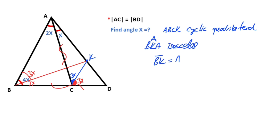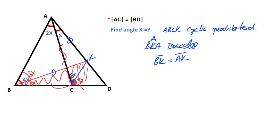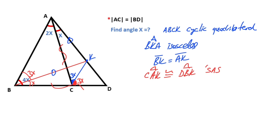Therefore B, K must be equal A, K. I want to write it using the circumscribed circle sine rule — these two equal sides. And then if you focus on triangle A, C, K and triangle B, K, D, these two triangles are congruent, because they have two equal sides and the angle between these two equal sides.